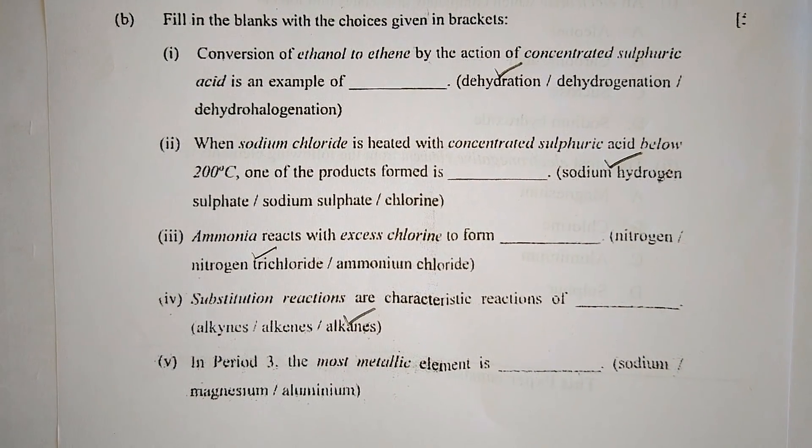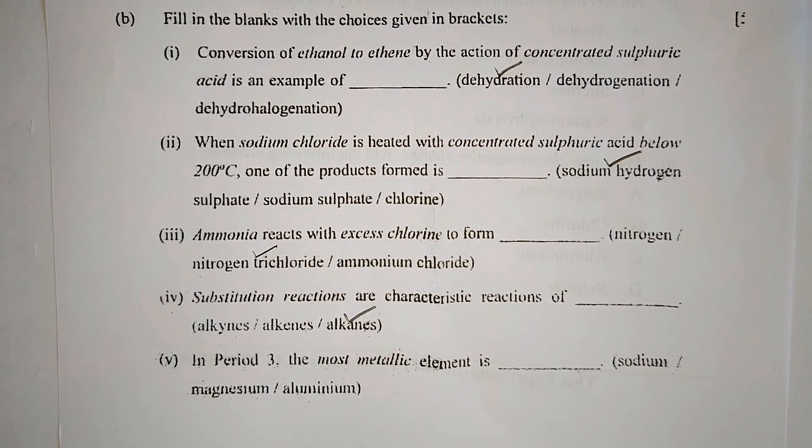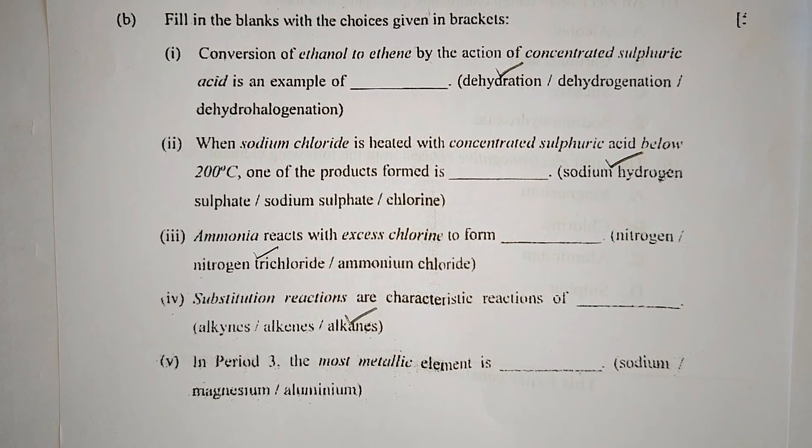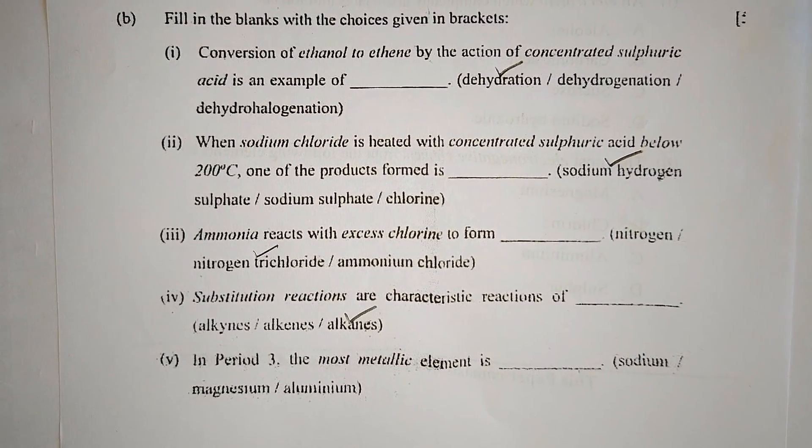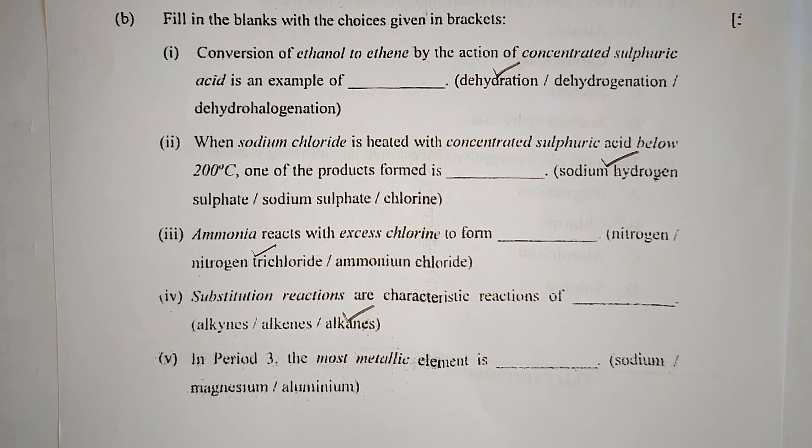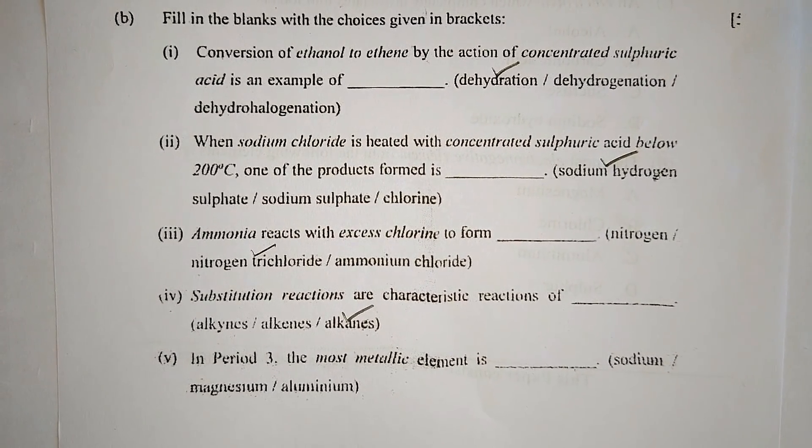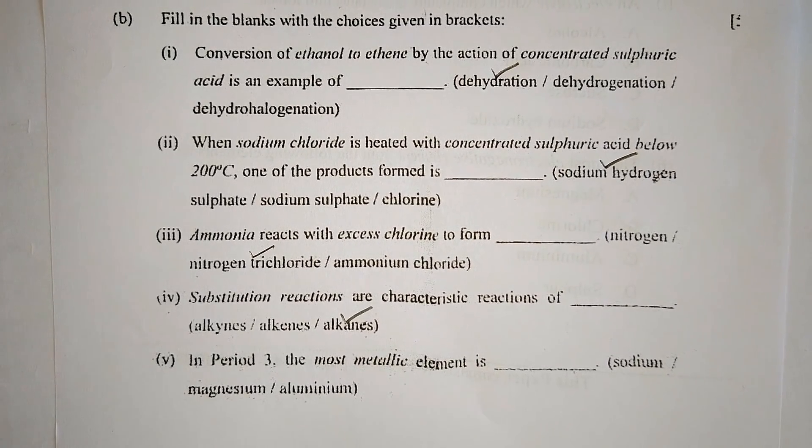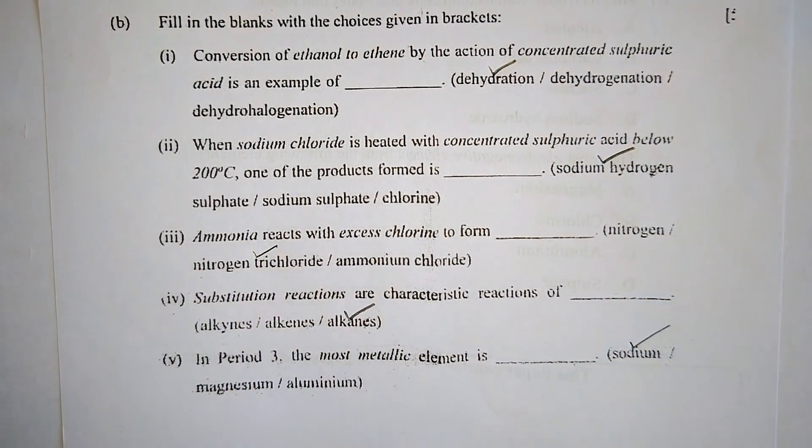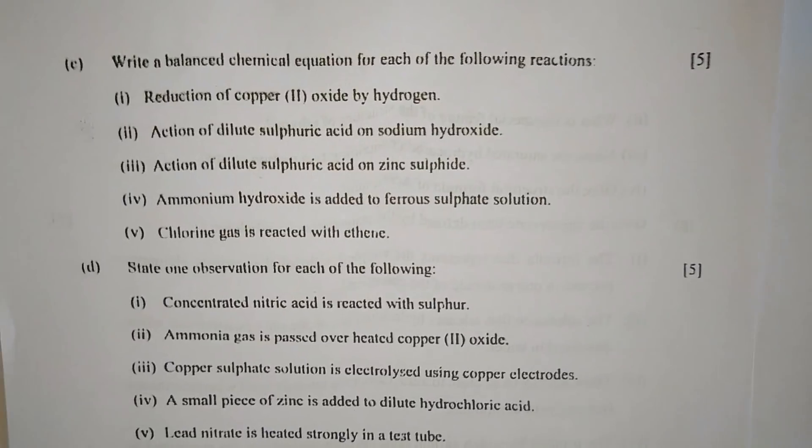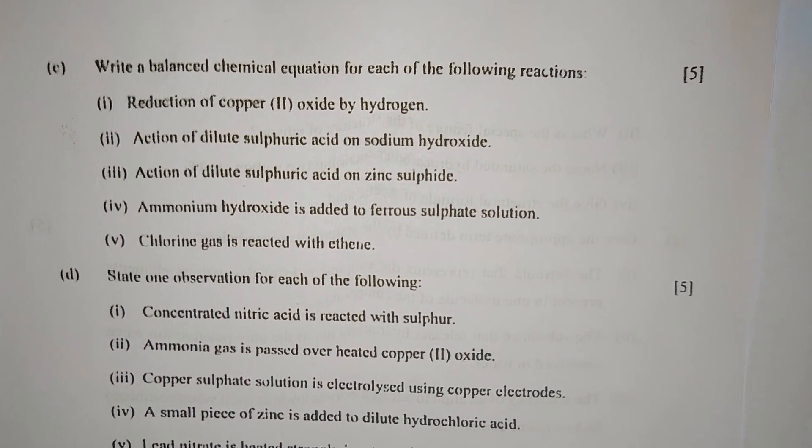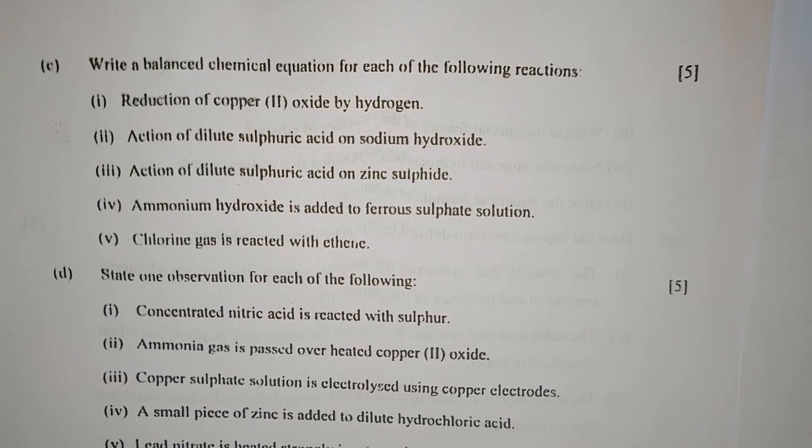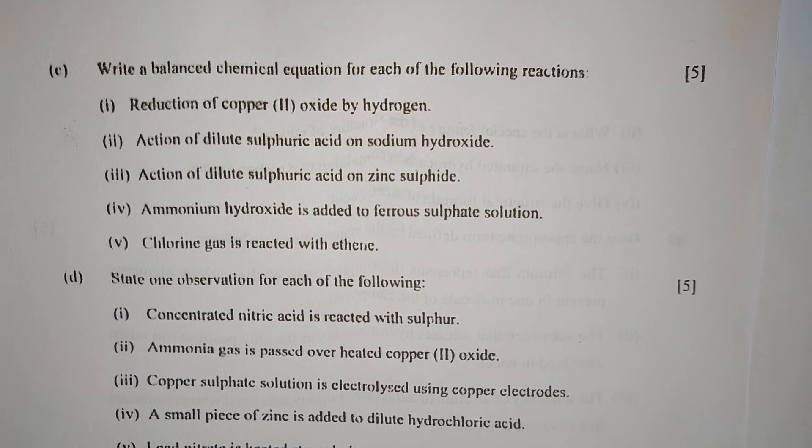Number four: Substitution reactions are characteristic reactions of saturated hydrocarbons. The options are alkynes, alkenes, and alkanes. The correct answer is alkanes. Number five: In period three, the most metallic element is sodium, magnesium, or aluminium. We know metallic property of an element increases while moving from top to bottom and decreases while moving across a period, so the correct answer will be sodium.